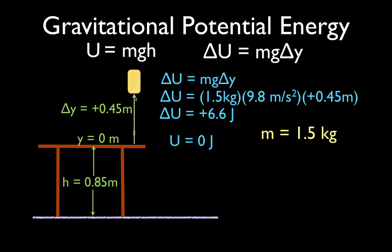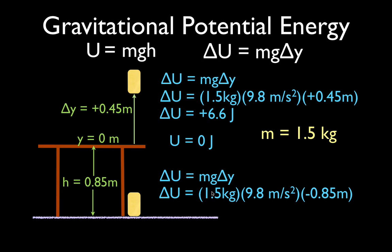We could also take this object and lower it down to the ground surface. We calculate the change in potential energy: delta U equals mg delta Y. The mass and acceleration due to gravity are the same. The table is 0.85 meters tall, but we lowered the object, decreasing its height by 0.85 meters, so delta Y is minus 0.85. When you lower something down, you decrease its potential energy, so we decreased its potential energy by 12.5 joules. That's all starting from this point.